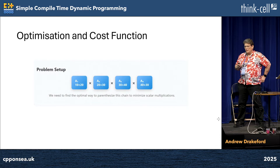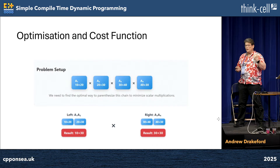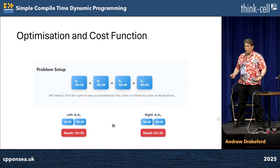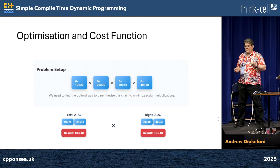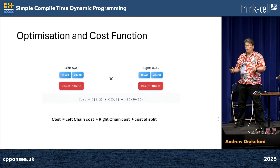Central to this is an optimisation of the cost function. In this example, we consider A1, A2, A3 and A4 matrices. If we split them in two, there's a left-hand matrix chain of A1 times A2 and a right-hand chain of A3 times A4. The cost of this is the cost of the left-hand chain, the right-hand chain, and the cost of the split, which is multiplying these two red result matrices together.